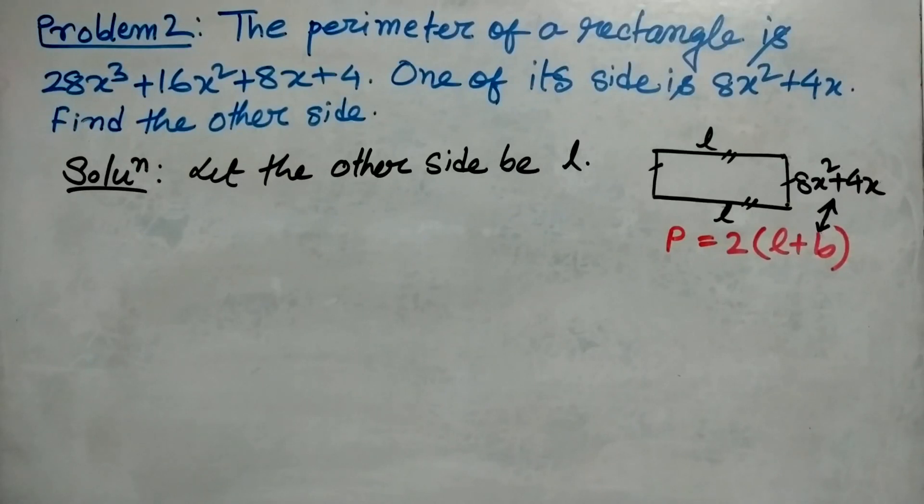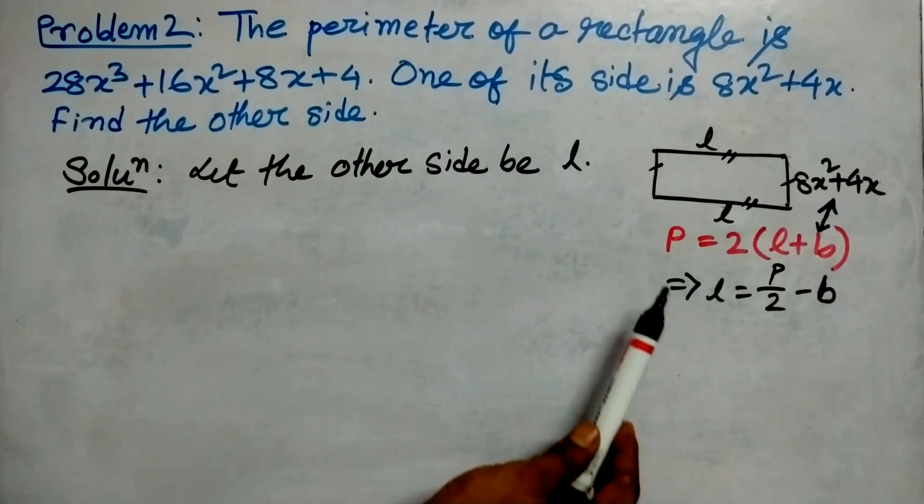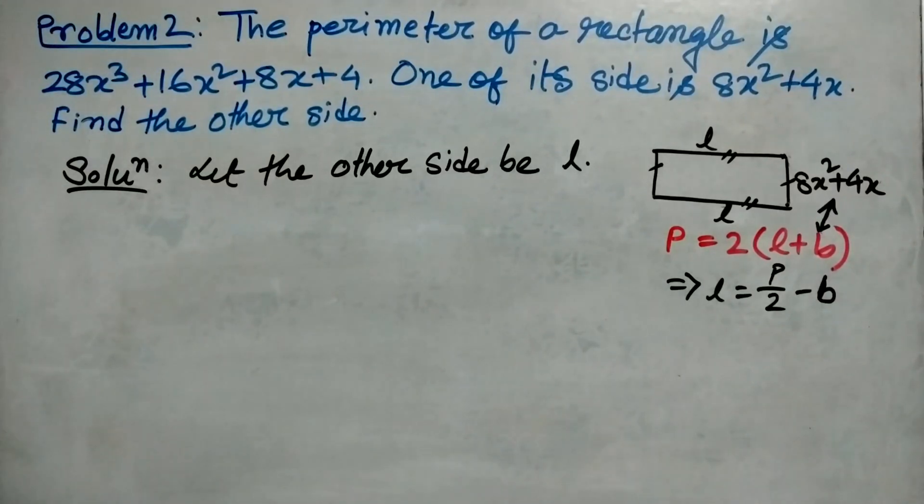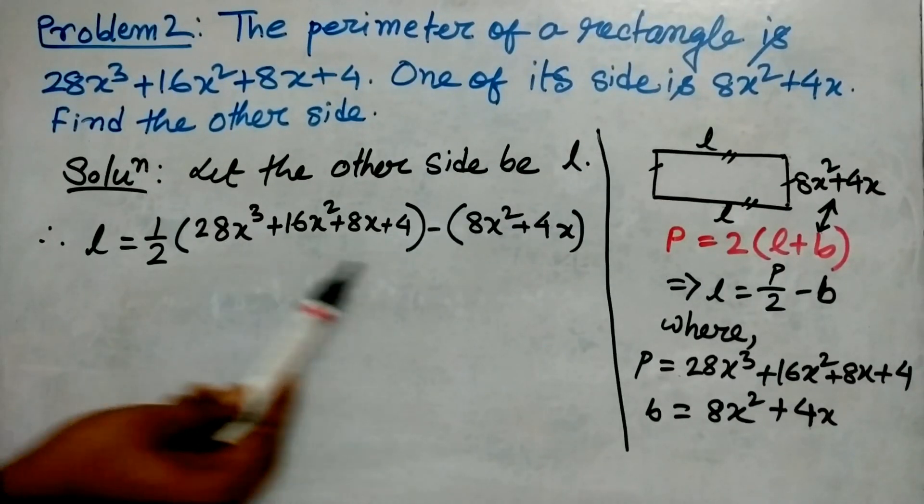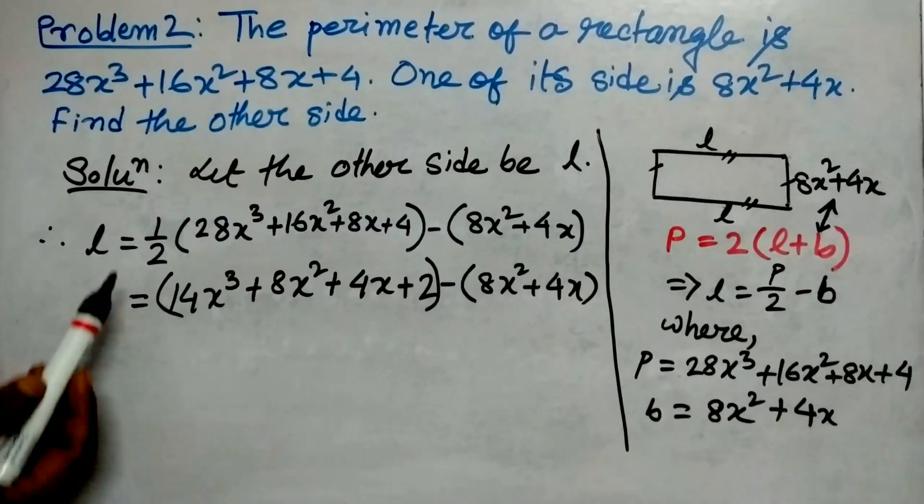Let this b represent 8x²+4x and we have to find l. From the above equation, l = p/2 - b, where p = 28x³+16x²+8x+4 and b = 8x²+4x. We have put the values of p and b.